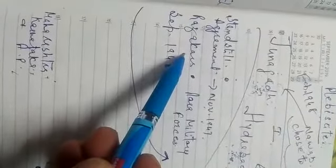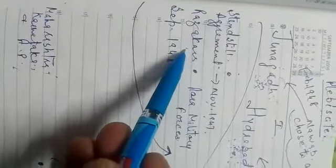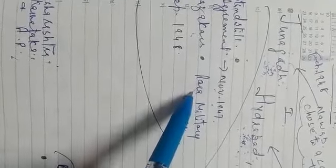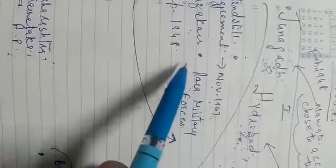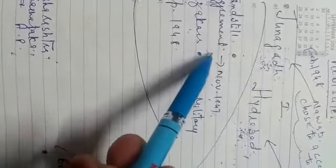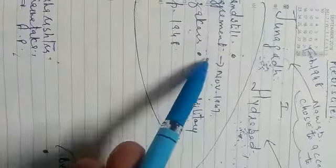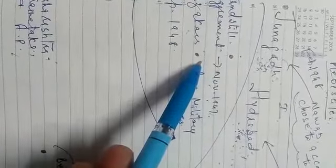The Nizam wanted to curb them using his paramilitary forces known as Razakars. These Razakars were so cruel that they murdered, maimed, raped, and looted people, especially targeting non-Muslims, because the Nizam himself was a Muslim.